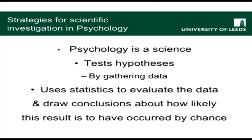So in this case, we might measure androgen levels of men and also measure how aggressive they are by, for instance, giving them a questionnaire to ask about their aggressive traits. Once we've collected our data, we want to use statistics to evaluate the data and to draw conclusions about how likely it is that the result we've found could have occurred by chance. We'd be looking for a correlation between those two variables.